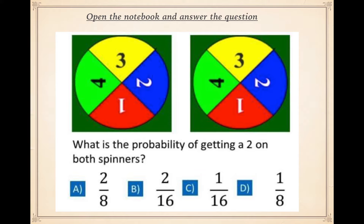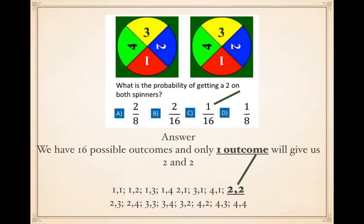The answer: there are 16 possible outcomes. Listing them out — one-one, one-two, one-three, one-four, two-one, three-one, four-one, two-three, two-four, three-three, three-four, three-two, and so on. To get two-two we have a very low chance — one in 16. The answer is one over 16, which is quite unlikely.